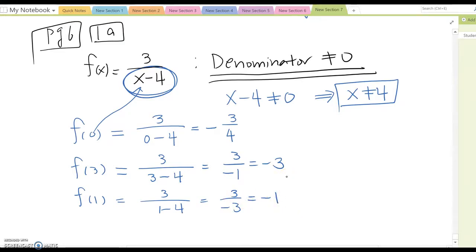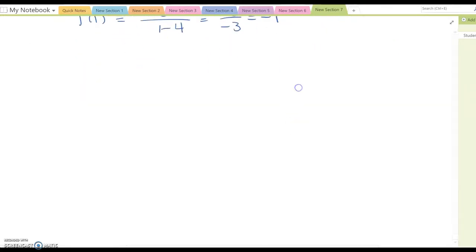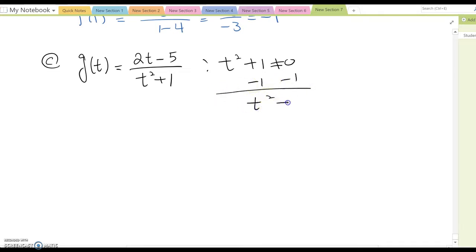Let's cover a little bit more difficult problem, like c. c shows that g(t) equals 2t minus 5 over t squared plus 1. The same thing, we want to find out the limitation before the beginning of this problem. So we set up t squared plus 1 cannot be 0. Minus 1 minus 1, then t squared cannot be negative 1.